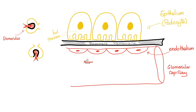So in diffuse proliferative, deposits are found under the endothelium. In membranoproliferative type 1, also under the endothelium — subendothelial. But in type 2, they go into the basement membrane — hashtag dense deposit disease. Whether MPGN type 1 or type 2, either way you can end up splitting the membrane into two pieces, giving you the classic tram track appearance.